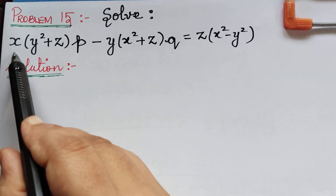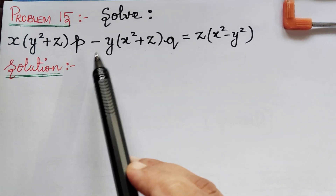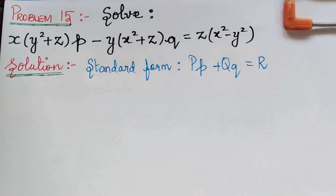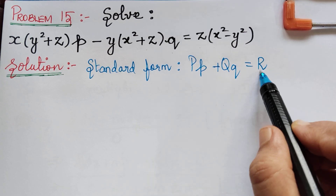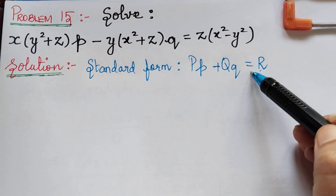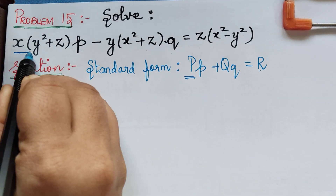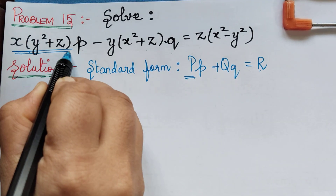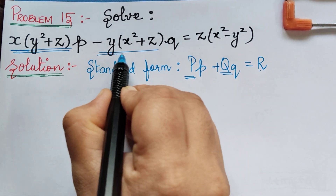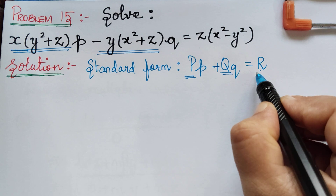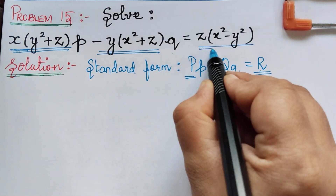We first compare this given equation with the standard form. The standard form of Lagrange's equation is Pp + Qq = R. Comparing, we find that P = x(y² + z), Q = −y(x² + z), and R = z(x² − y²).